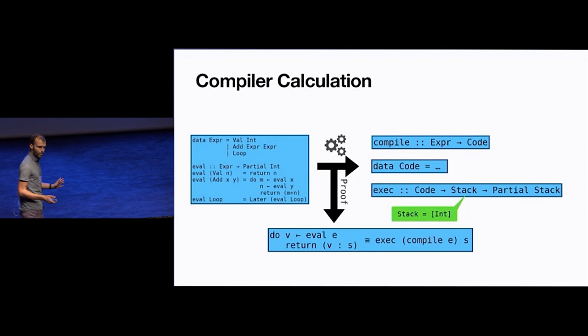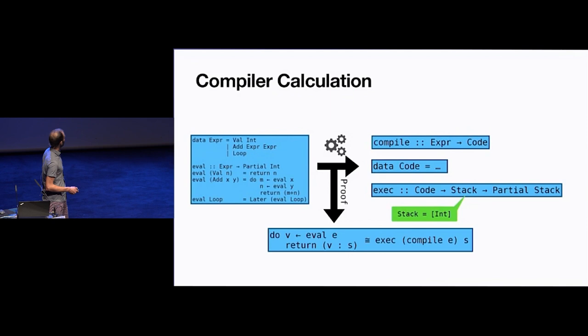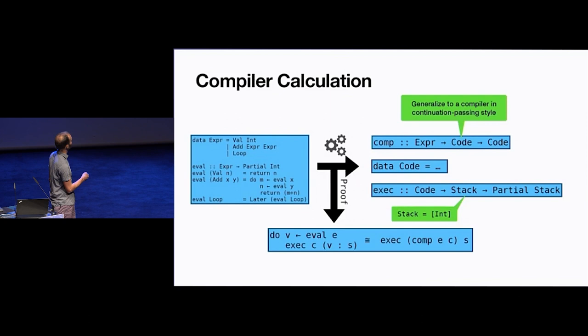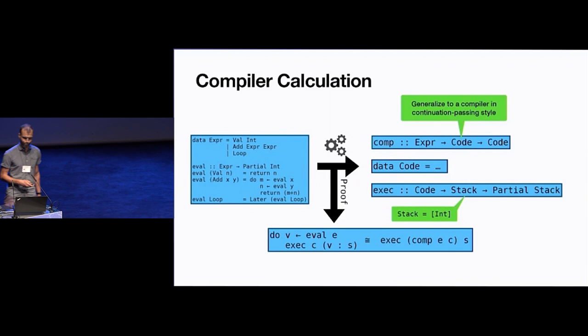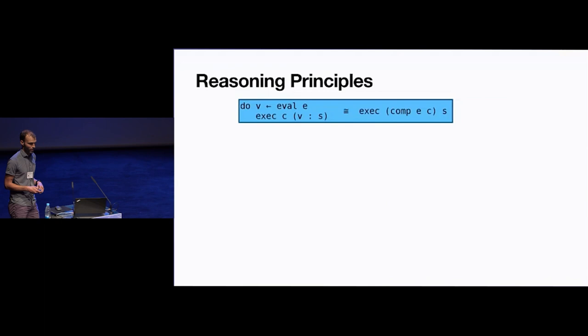We also want a proof of the compiler's correctness. To make the calculation go through, we actually have to generalize it slightly: the compiler takes a continuation argument. For a given expression and some continuation, it produces the code for the expression followed by the continuation code. The correctness specification says: evaluating expression E, sticking the result on top of the stack, and executing the continuation, is the same as executing the compiled code on the right. We prove this property and the compiler definition falls out.